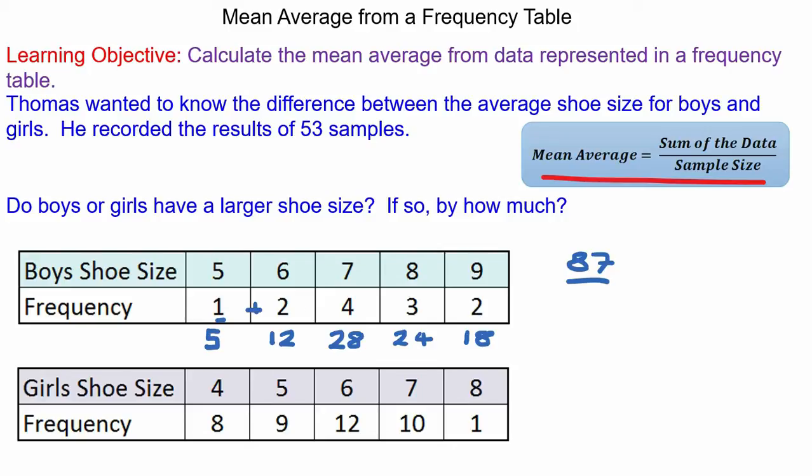Now in total we have one, add two, add four, add three, add two which is twelve. So the average shoe size of a boy's would be eighty-seven divided by twelve which is seven point two five.